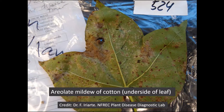The next disease I'd like to describe is areolate mildew, also known as ramularia. This disease is characterized by white sporulation that you might see on the underside of a leaf surface. On the upper side of the leaf surface it can turn the leaf a purple color, but that may depend on the variety. This is typically a late season disease, but in Florida it can have an early onset and lead to significant defoliation. It is possible to manage this with one to two fungicide applications in mid-season if you see that early onset occurring.